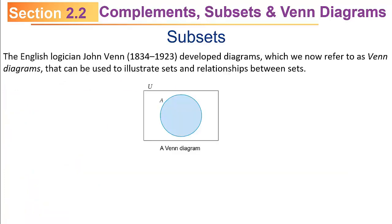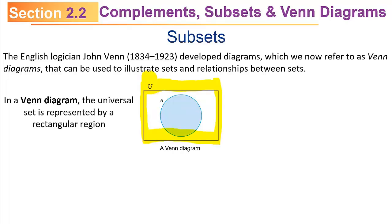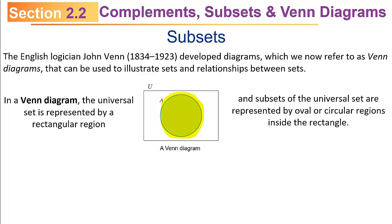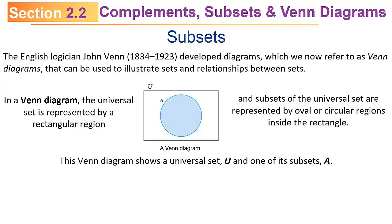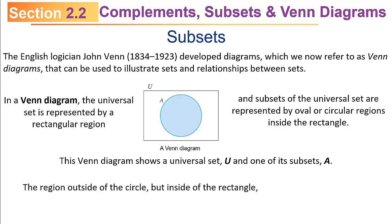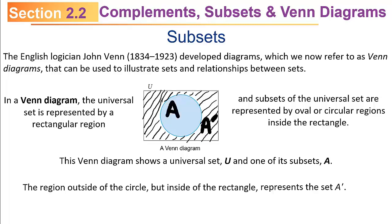The English logician John Venn, who lived from 1834 to 1923, developed diagrams — which we now call Venn diagrams — that can be used to illustrate sets and relationships between sets. In a Venn diagram, the universal set is represented by a rectangular region, and the subsets of the universal set are represented by oval or circular regions inside the rectangle. The region outside the circle but inside the rectangle is the complement of set A.